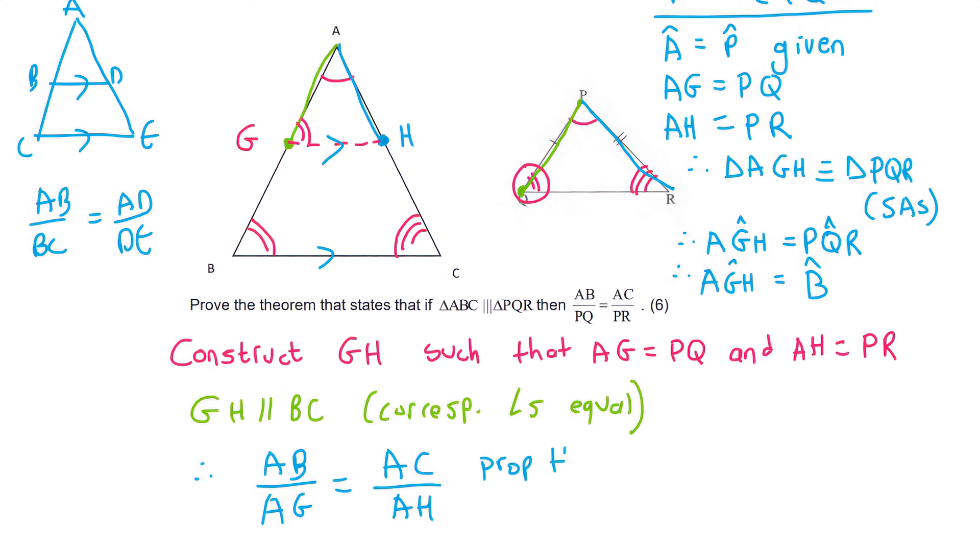So you can either say prop theorem because GH is parallel to BC, or some students like to say line parallel to side of triangle. I usually use this one at the top, but I know that some students use the one at the bottom.